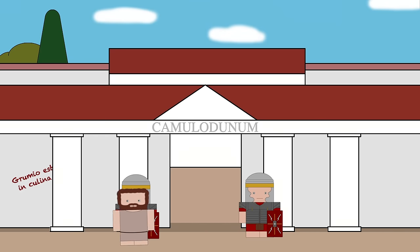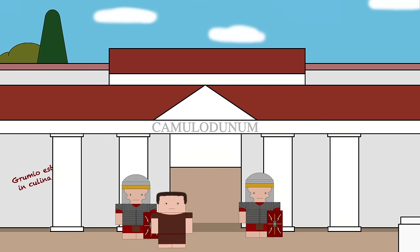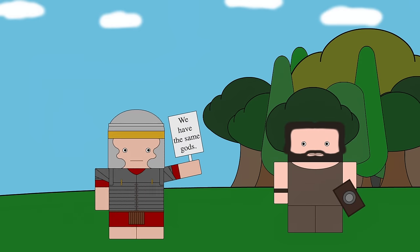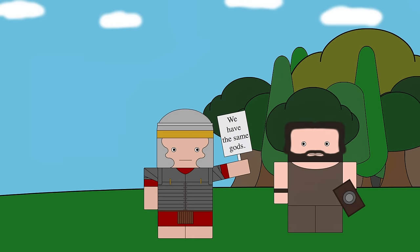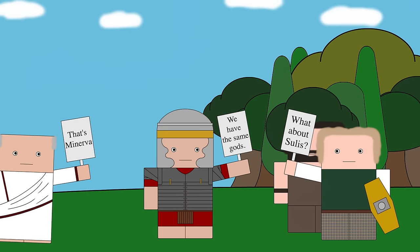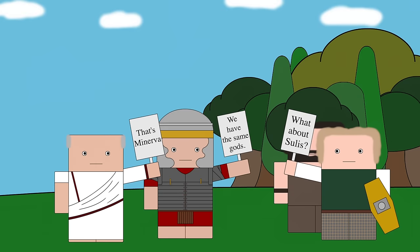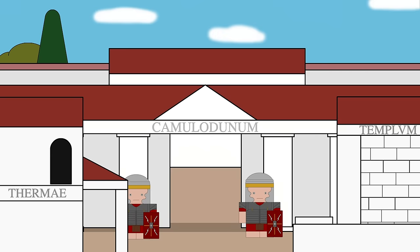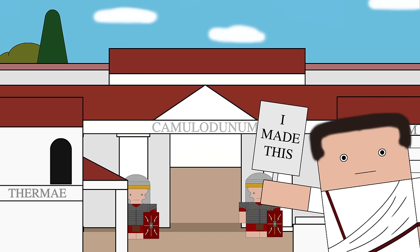One way of measuring just how Roman the British natives had become is by looking at religious belief. The Romans had a policy of incorporating native gods into their own pantheon. For example, the goddess Sulis, who was worshipped at a place called Aquae Sulis — now called Bath — was considered by the Romans to be the equivalent of their goddess Minerva, the goddess of wisdom. It is important to remember that the building of towns and all of the traditionally Roman things in them, such as baths and temples, were almost always paid for by the local elites, not the emperor or the central Roman government.